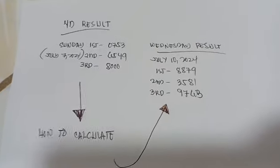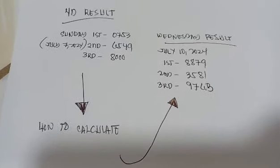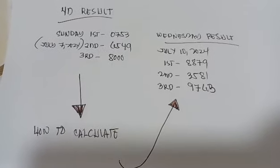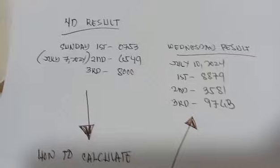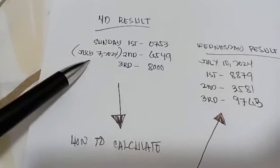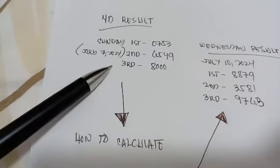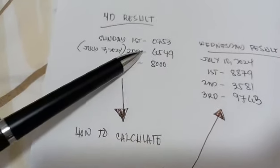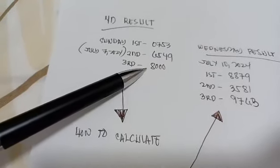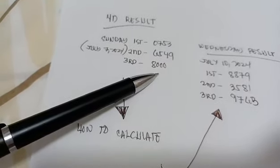Hi guys, in this video I want to share with you a new strategy on how to win 4D. This is the result last Sunday, July 7, 2024. The first prize is 0753, second is 6549, third is 800.